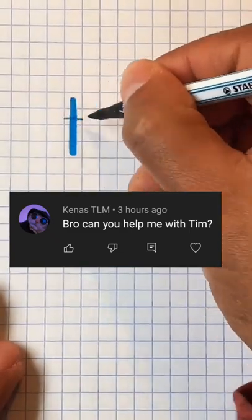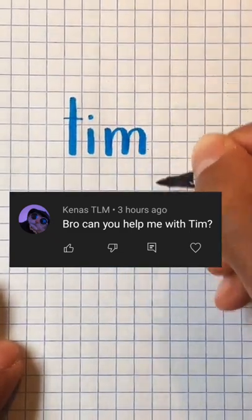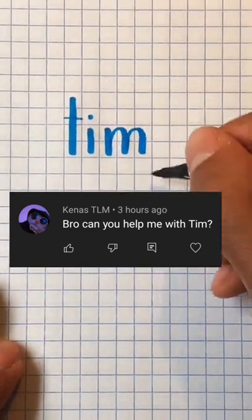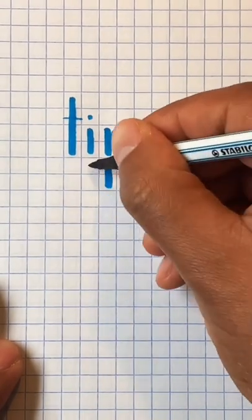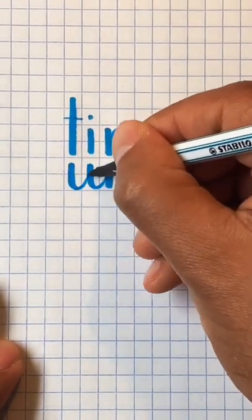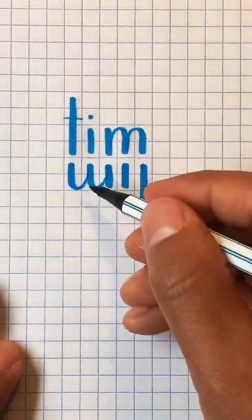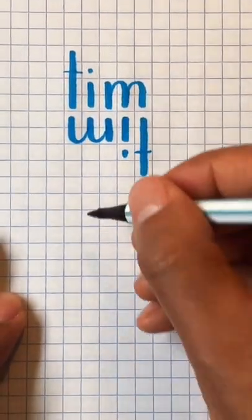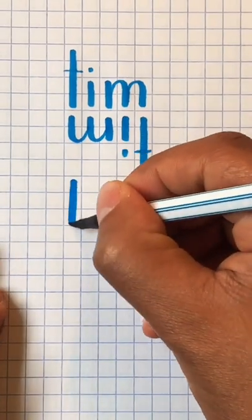Since everyone loved my last video on downstroke matching, here's an even simpler example for Tim. Write the name right side up and upside down, with each square getting one downstroke. Then match the downstrokes up.